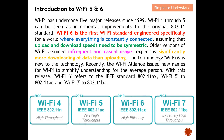The terminology Wi-Fi 6 is new to the technology. Recently the Wi-Fi Alliance issued new names for Wi-Fi to simplify understanding for those who are not really tech savvy — they just want laymen to understand the different Wi-Fi standards. Currently we are at Wi-Fi 6, Wi-Fi 7 will be the future, and Wi-Fi 1 all the way to Wi-Fi 5 is the past. Wi-Fi 6 is referred to as IEEE standard 802.11ax, Wi-Fi 5 is 802.11ac, and Wi-Fi 7 will be called 802.11be.